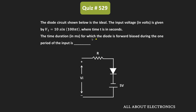Here this input voltage V1 is applied to the given circuit, and as you can see this input voltage can be given as 10 times sin(100πt). So here we have been asked to find, during one period of the input signal, for what duration this diode remains in the forward bias condition.